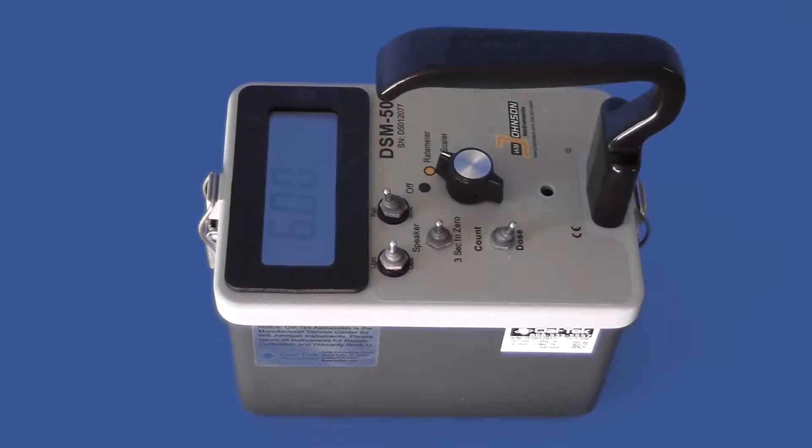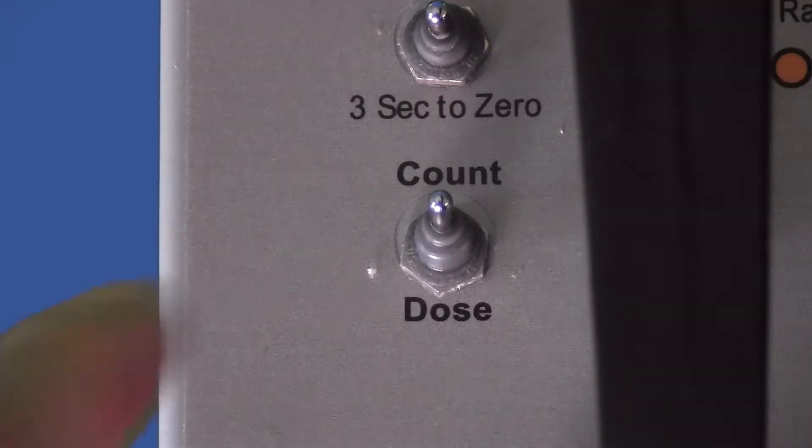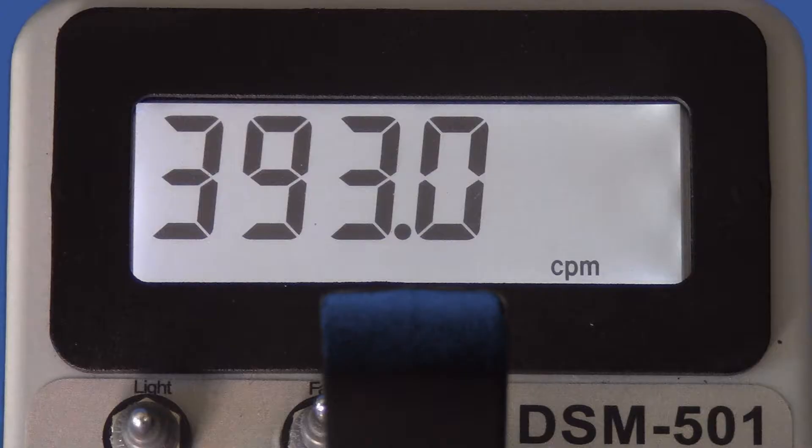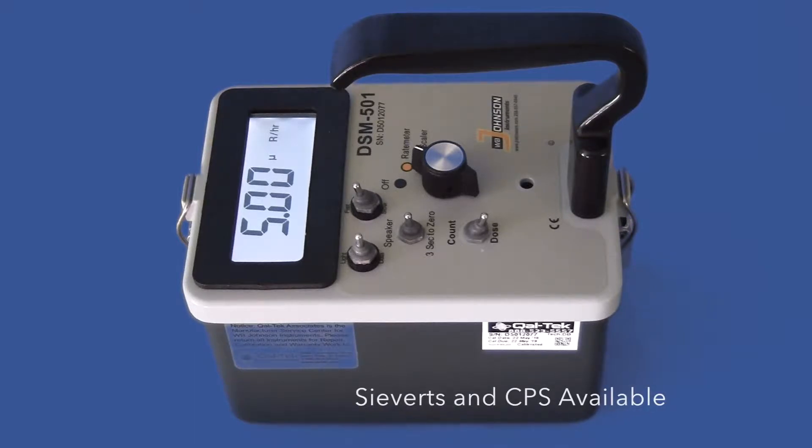Starting out in rate meter mode, we can turn on the meter face light by switching this control upward. This illuminates the display nicely for 30 seconds. The rate meter mode features dose in microroentgen per hour and counts in CPM, counts per minute. We can change easily to international units via an internal switch. We will demonstrate that later on in the video.